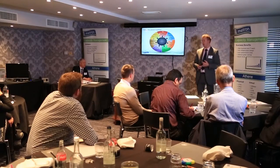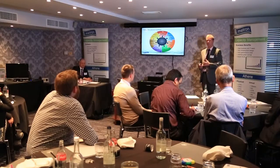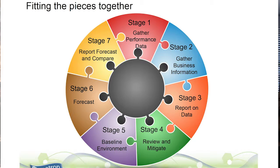Fitting the pieces together — our jigsaw puzzle. Stage one: get some performance data. That's our component level, so we understand what's happening there. Business information — our strategy, our forecast, what growth rate are we expecting over the next year. Stage three: produce some nice reports. Review those reports and mitigate. Then baseline the environment and start forecasting — what models can we produce that provide benefit to the business?